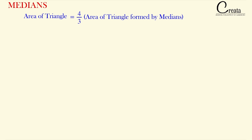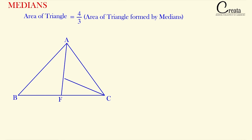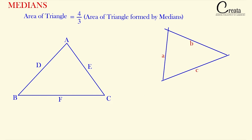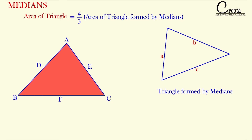Moving further, the next concept is that the area of a triangle is equal to 4/3 times the area of the triangle formed by the medians. If we take a triangle ABC with medians A, B, and C — that is, three medians — and we take out these three medians and form a new triangle, the area of the complete triangle ABC is equal to 4/3 times the area of the triangle formed by those medians. This is an important concept used in solving questions related to the area of a triangle and the area of the median triangle.